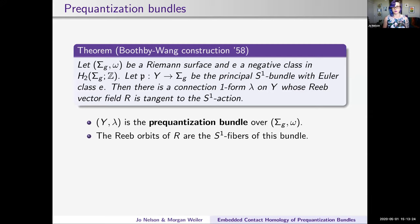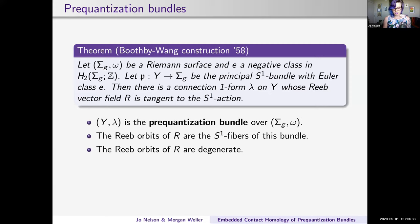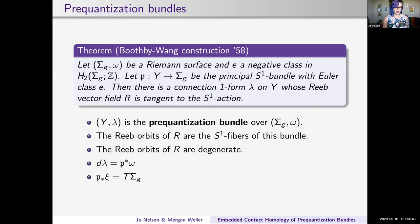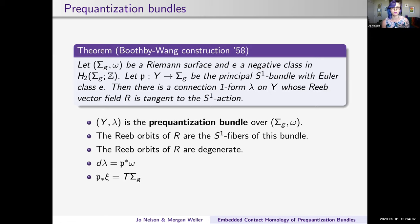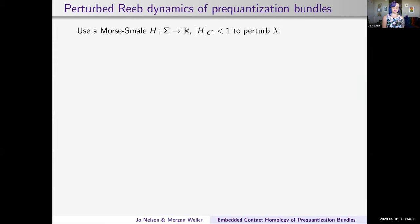The Reeb orbits of R are going to be the S¹ fibers of this bundle when we use the connection one-form lambda as the contact form. The Reeb orbits are all degenerate—there are no isolated orbits, which is one way to see the degeneracy. You can also go back to the Hopf fibration computation and see that you're going to get one as an eigenvalue. We have that d lambda is the pullback of omega, and the pushforward of the contact distribution is equal to the tangent bundle of the Riemann surface. Normally when we do contact homology theories, we want a non-degenerate contact form.